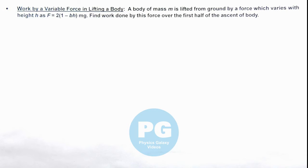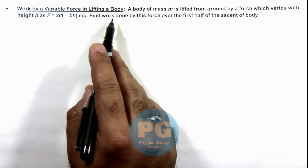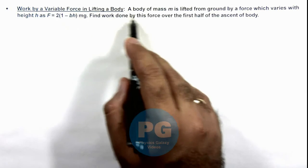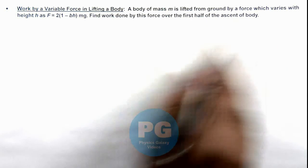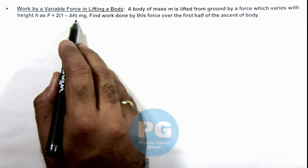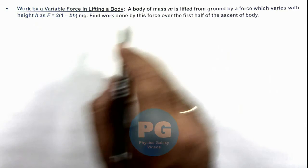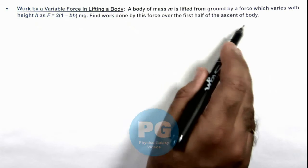In this illustration we'll discuss the work done by a variable force in lifting a body. Here we are given that a body of mass m is lifted from ground by a force which varies with height h as F = 2(1 - bh)mg. We are required to find work done by this force over the first half of the ascent of body.